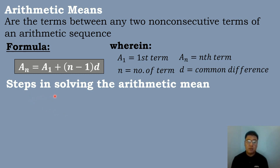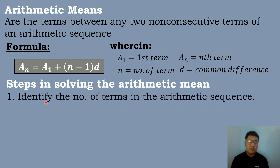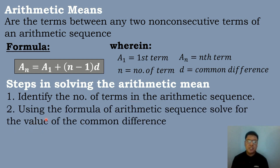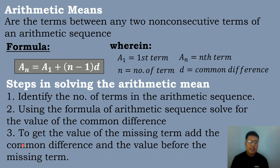So these are the steps in solving for the arithmetic mean. The first step is to identify the number of terms in the arithmetic sequence. Then, using the formula of the arithmetic sequence, solve for the value of the common difference. The third step is to get the value of the missing term by adding the common difference to the value before the missing term.